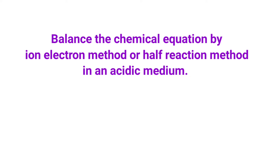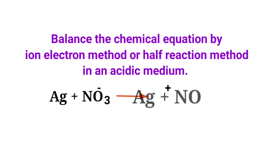Balance the chemical equation by the ion electron method, or half reaction method, in an acidic medium. Silver plus nitrate ion gives silver ion plus nitric oxide.